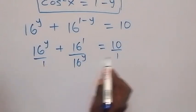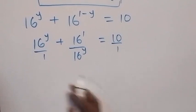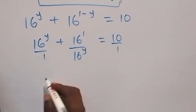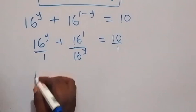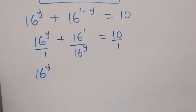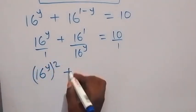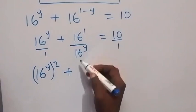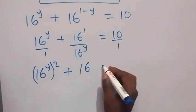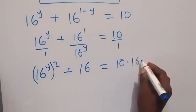Here 16 serves as the LCM, so we multiply each term by 16 raised to power y to clear the fraction. This gives us 16 raised to power y squared plus 16 equals 10 times 16 raised to power y.